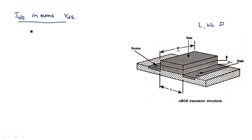Before starting the derivation, we should know there are two voltages: VGS and VDS. VGS (gate-to-source voltage) is used for charge inversion, which creates the channel between source and drain — the channel having length L and width W. VDS is responsible for the flow of current between source and drain, meaning electrons move from source to drain and conventional current flows from drain to source.